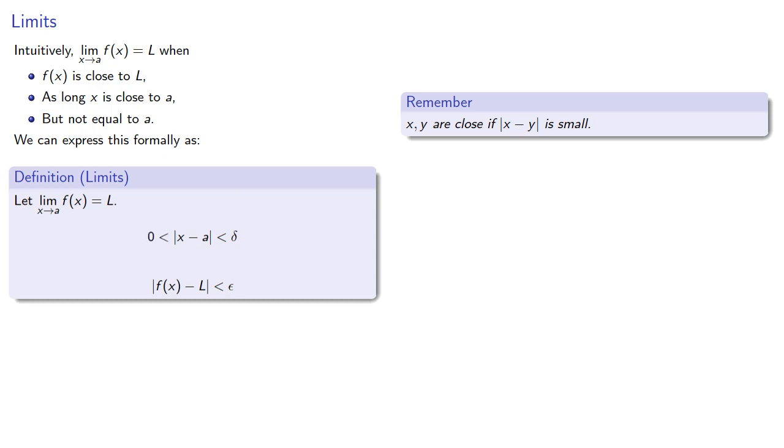Now we have these epsilons and deltas floating around, and so we need to determine which came first, the epsilon or the delta. A basic principle in life is start with what you want. In this case, since we want f of x to be close to L, then we want this epsilon to be our starting point.